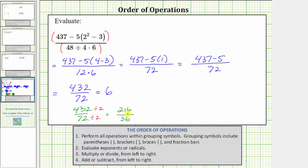Now let's say we recognize that 216 and 36 share a common factor of six. We can continue simplifying by dividing the numerator and denominator by six. 216 divided by six equals 36. Thirty-six divided by six is equal to six.